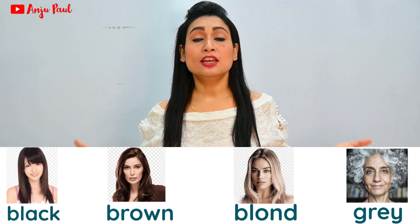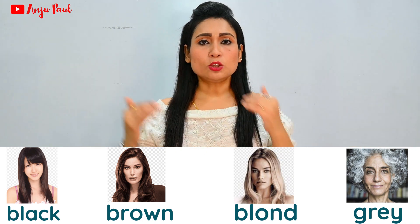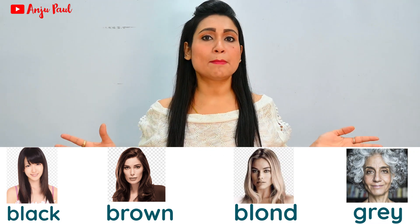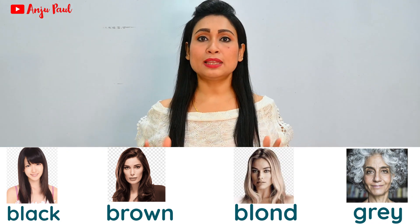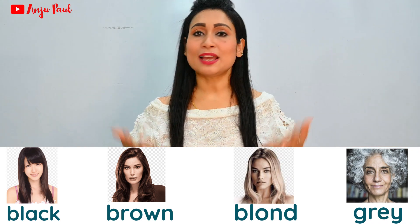If we talk about hair color, the colors of Indians and Asians are normally black — 'I'm having black hair' or 'She has got black hair.' If you have a slightly dull or brownish color, we say 'brown hair.' Light-colored hair, like most Americans or Western people have, is called 'blonde hair.' And if someone has grey hair, do not say 'white hair' — the correct word is 'grey hair.'